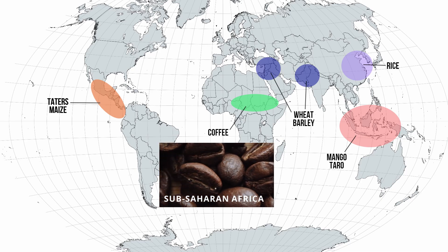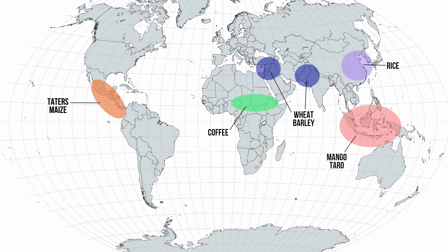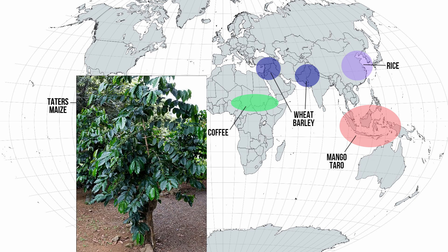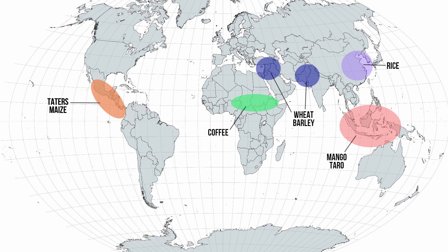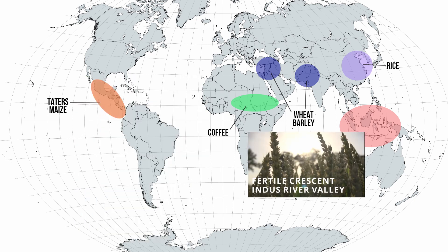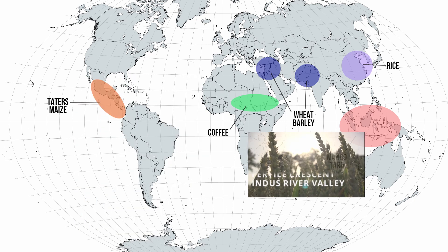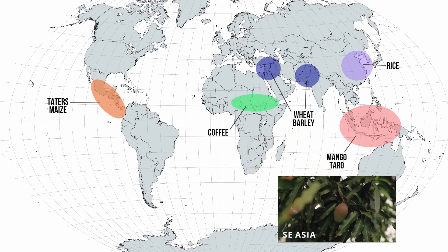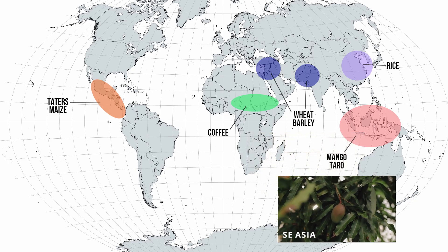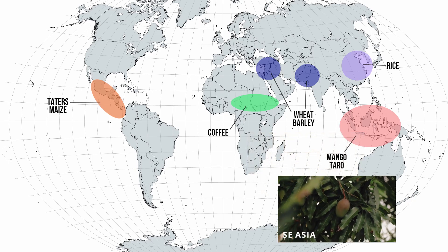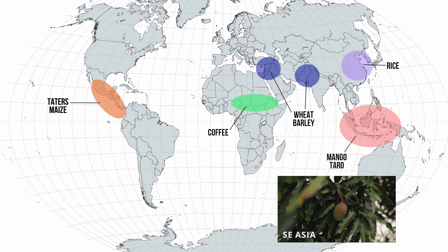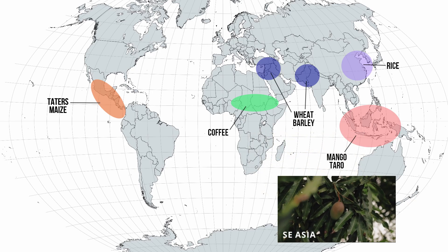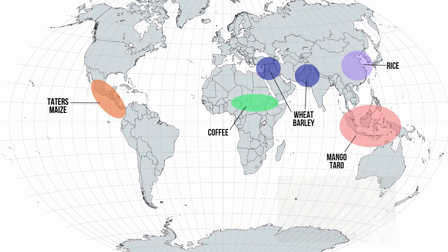In case College Board tries to throw you a curveball, here's what a coffee plant looks like. We got our wheat and barley in the Fertile Crescent, mango and taro in Southeast Asia. By the way, if you've never had a taro boba drink in your life, go bless yourself — you can tell your parents it was homework.